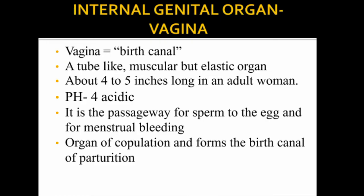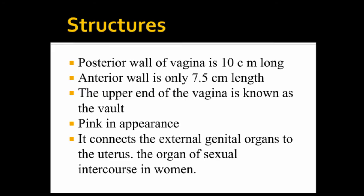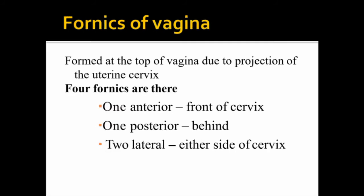The internal genital organs include the vagina. The vagina is a tube-like muscular but elastic organ, about 4 to 5 inches long in the adult woman. It connects the external genital organs to the uterus and serves as the organ of sexual intercourse in women. The fornices of the vagina are formed at the top due to the projection of the uterine cervix.